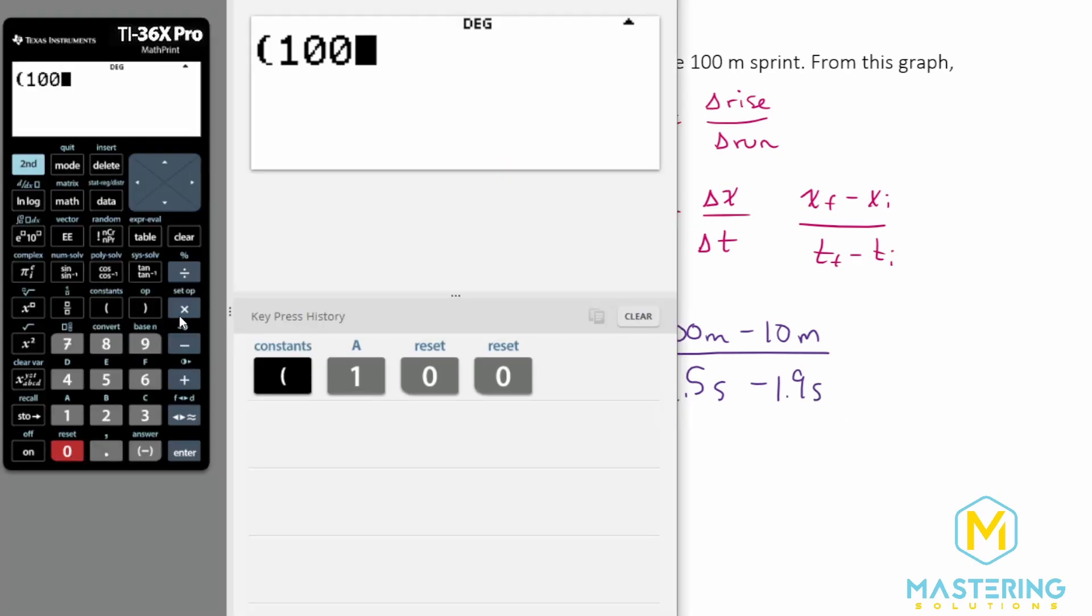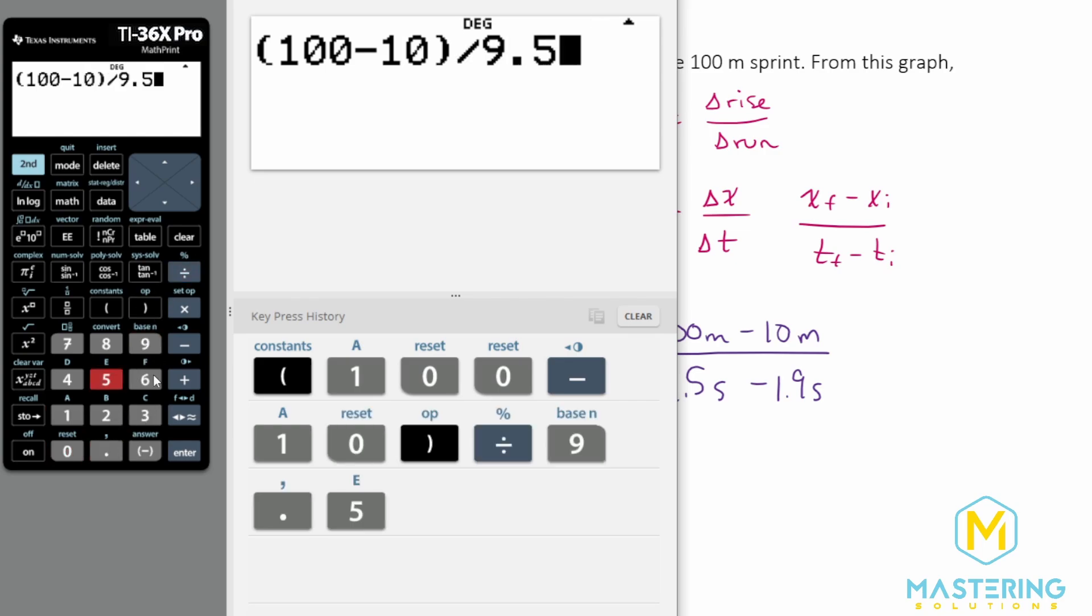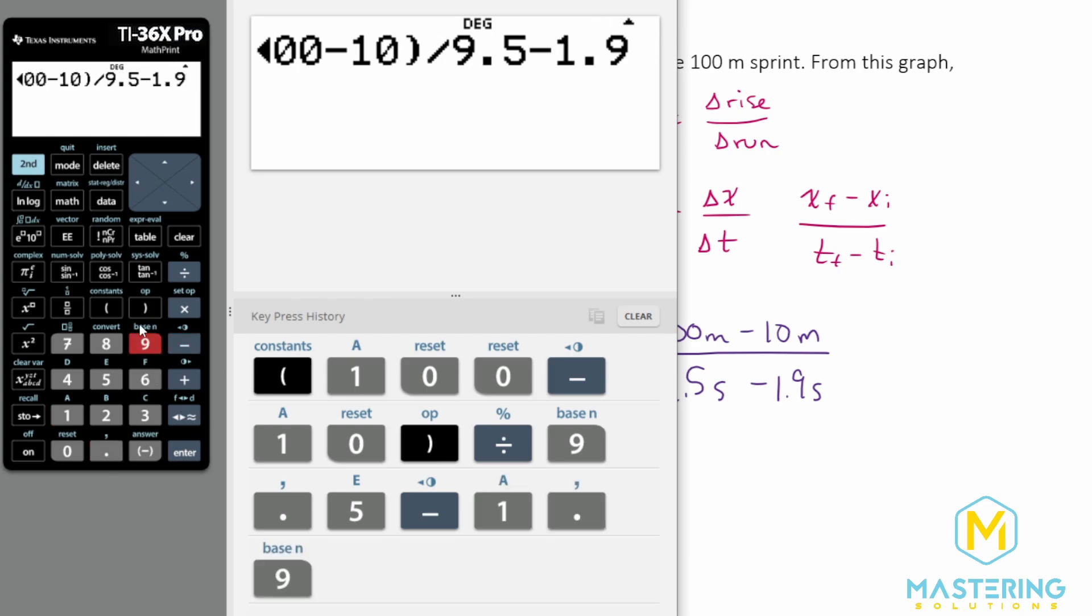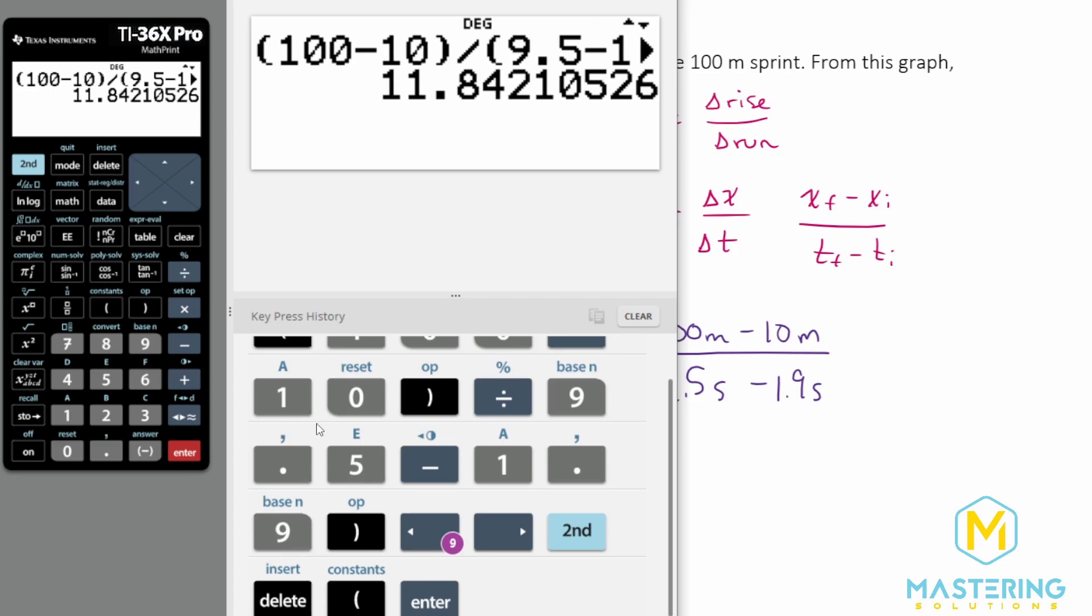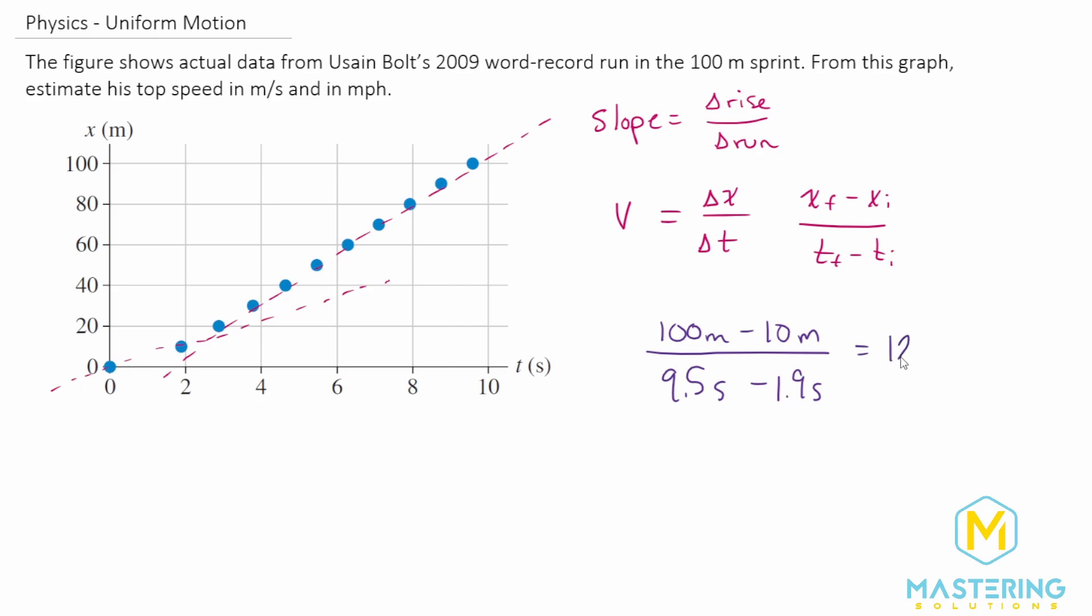100 minus 10, and then divided by 9.5 minus 1.9. And let's add the parentheses there. All right. So that gives us a speed of 11.84. So we'll round that to 12 meters per second. So that is the velocity for the fastest section from his world record run.